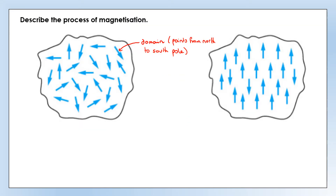Now let's look at how we actually turn something into a magnet using something called magnetic domains. You can see some of these domains represented on these diagrams. A material can be thought of as made of lots of mini magnets. In an unmagnetized material these mini magnets all point in different directions so they cancel each other out. In a magnetized material on the right, a lot of them have been lined up, so it has its own magnetic field.